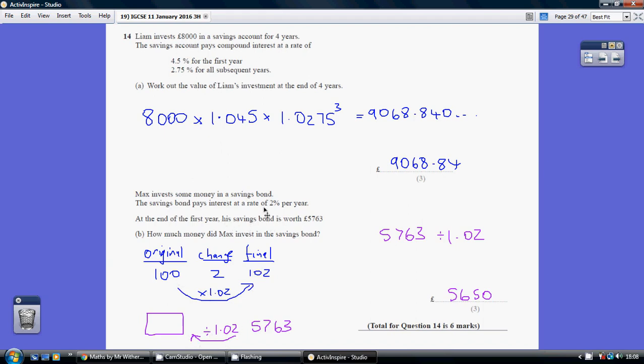Now we're told that the investment is worth £5,763 after the interest. So that is our final value. We want the original value, so it's 5,763 divided by 1.02, and that's £5,650.